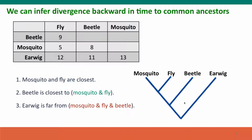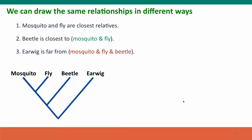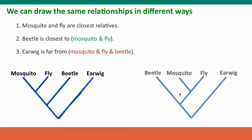I've drawn the tree this way, but it's important to know that you can draw trees lots of different ways. The information doesn't come from the order of the organisms along a line — it comes from going back to the common ancestor. We could draw this tree a different way and it would have the same relationship information. Mosquito and fly are each other's closest relative, and the next closest relative is the beetle — same on both trees.